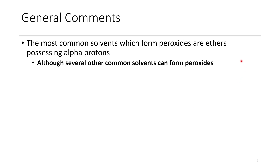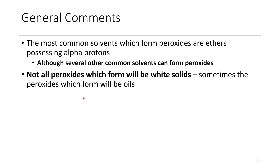So a couple of comments to start: the most common one that people know about is the formation of peroxides on ethers because they possess alpha protons, although there are several other C-H bonds that are able to form peroxides, as well as other functional groups. I'm not going to go into too much detail about what types of peroxides can form, other than listing possible solvents or reagents that can form them.